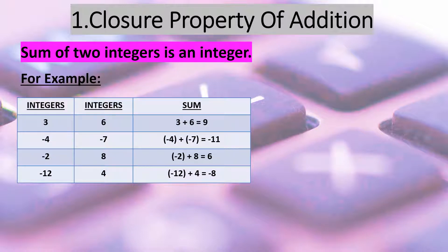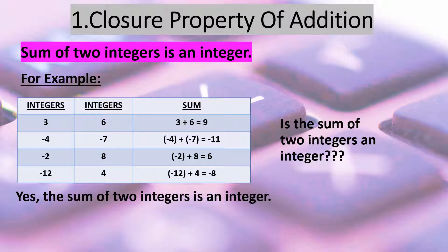When integers are added, look at their sums. 3 plus 6 is equal to 9. Minus 4 plus minus 7 is equal to minus 11. Minus 2 plus 8 is equal to 6. Minus 12 plus 4 is equal to minus 8. Now the question arises, is the sum of two integers an integer? So the answer to this question is yes.